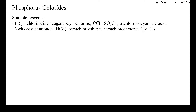Suitable chlorinating reagents for the activation of phosphines include elemental chlorine, carbon tetrachloride, sulfuryl chloride and chloroimides, other perchloroalkanes, chloroketones, and trichloroacetonitrile. Particularly useful are carbon tetrachloride or hexachloroethane, because these reagents chlorinate few other functional groups in addition to phosphines.